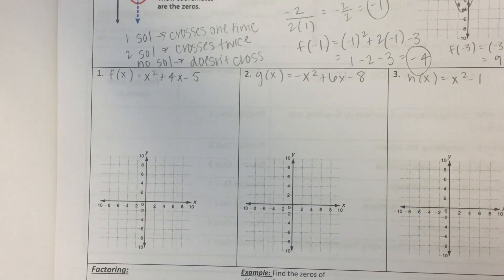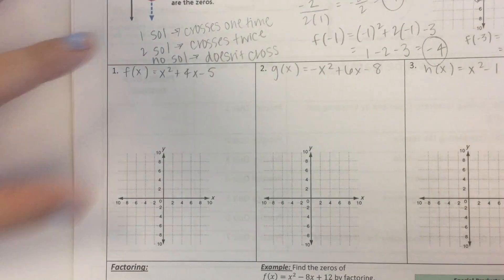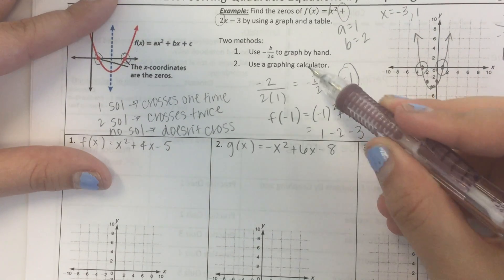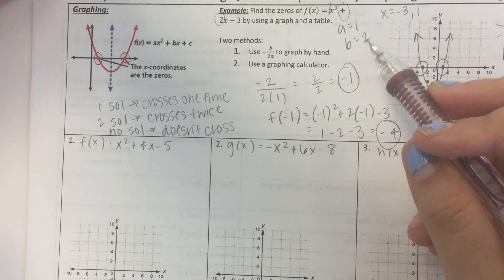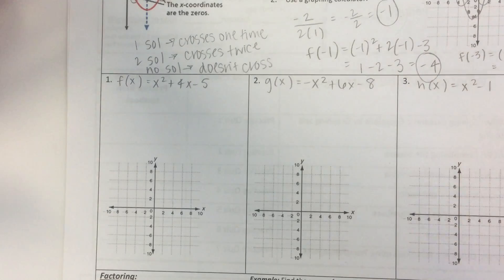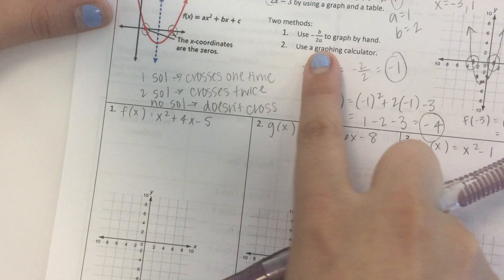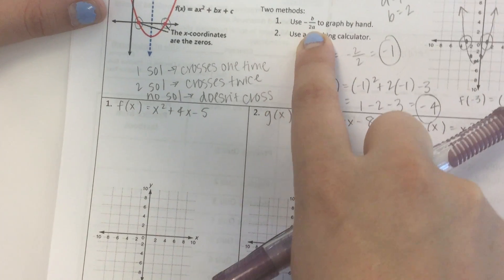I'll give you a second to pause. Okay, assuming you have paused the video and you've tried this on your own, let's go through this. Since we're not going to use a graphing calculator, we can do that in class, but since we're at home and we might not have a graphing calculator, we're going to do it by hand using the negative b over 2a method.